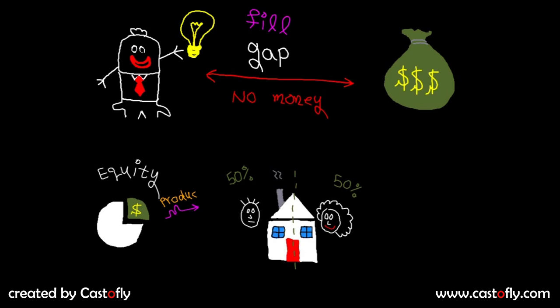Equity can produce cash in the future—for example, if you rent the house—or it can be converted to cash if you sell the house.